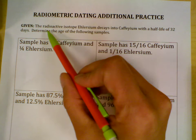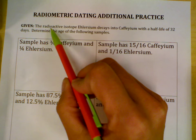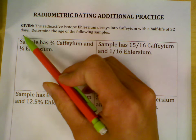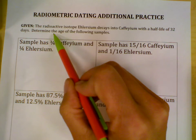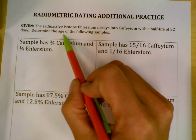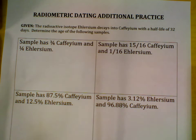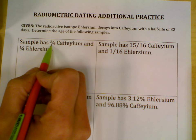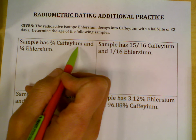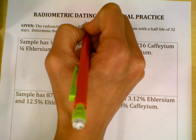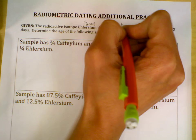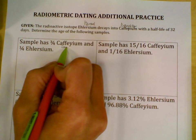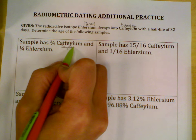You'll always be given some part of the problem. This one says the radioactive isotope Lerzeum decays into caffeine with a half-life of 32 days. For each of these problems, we're going to determine the age — we're not just solving for the half-life, we're solving for the age itself. The first step is to find the number of half-lives. In this one, a sample has three-quarters of the caffeine, which is the daughter element. Remember, it's always listed as parent and daughter.